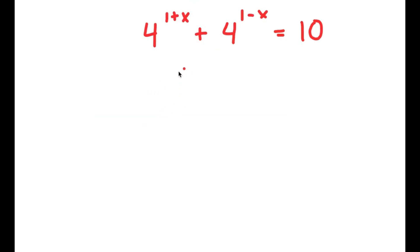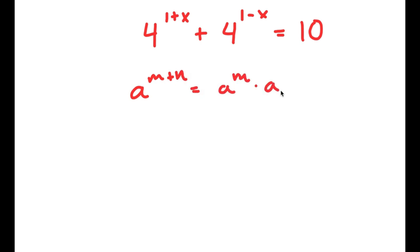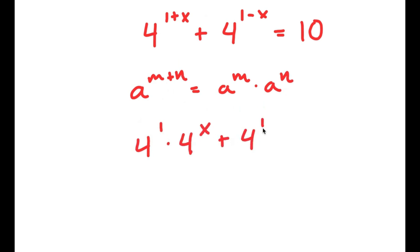So in this problem, I have 4 to the power of 1 plus x plus 4 to the power of 1 minus x is equal to 10. If I have something in the form a to the power of m plus n, this equals a to the power of m times a to the power of n. So 4 to the power of 1 plus x equals 4 to the power of 1 times 4 to the power of x, plus 4 to the power of 1 times 4 to the power of negative x, all equal to 10.